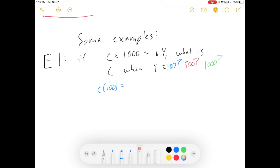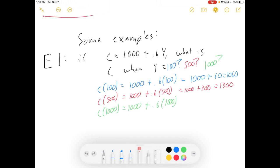Well, C of 100 is equal to 1,000 plus 0.6 times 100 is 1,000 plus 60 is 1,060. C of 500 is 1,000 plus 0.6 times 500 is 1,000 plus 300 is 1,300. C of 1,000 is 1,000 plus 0.6 times 1,000 equals 1,000 plus 600 equals 1,600.